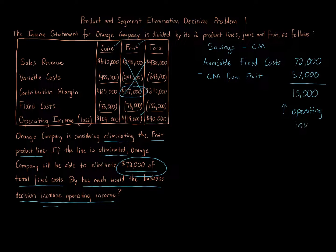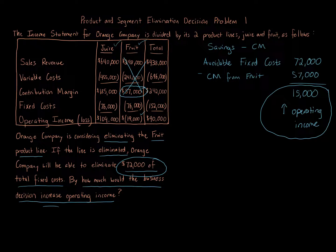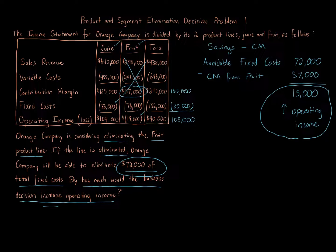Another way to calculate this: recalculate total operating income after the change. Juice contribution margin is $185,000 — that becomes your new total contribution margin. Fixed costs would be juice's $76,000 plus $4,000 of fruit's fixed costs that remain, totaling $80,000. So $185,000 minus $80,000 equals $105,000 operating income after. Comparing: $105,000 after minus $90,000 before equals a $15,000 increase.